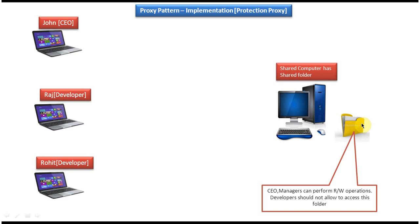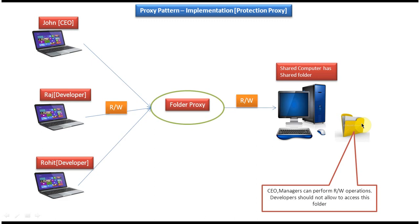To implement this, we introduce a folder proxy between the shared computer and the different kinds of users. The folder proxy contains logic that checks: if the user's designation is CEO or manager, it will allow the user to access the folder and perform read/write operations. If the user's designation is developer, it will say you don't have access to this particular folder. That kind of protection-related code we can write in the folder proxy.